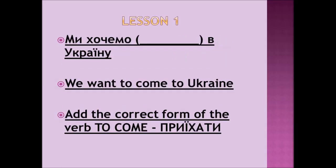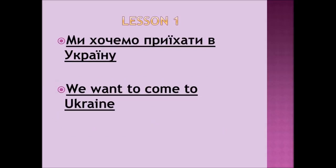Another example, again with the verb 'to come' — приїхати. Put the verb to come in the right form. The sentence is: 'We want to come to Ukraine.' Ми хочемо, [blank], в Україну. The right answer is: Ми хочемо приїхати в Україну. We want to come to Ukraine.